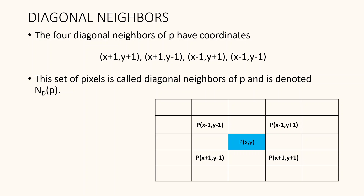Diagonal neighbours: the four diagonal neighbours of p have coordinates (x-1, y-1), that is the previous row previous column pixel; (x-1, y+1), previous row next column pixel; (x+1, y-1), next row previous column pixel; and (x+1, y+1). This set of pixels is called the diagonal neighbours of p and is denoted as ND(p). If we consider any new pixel q and it lies in any of these diagonal coordinates, we can say that q is a diagonal neighbour of p.